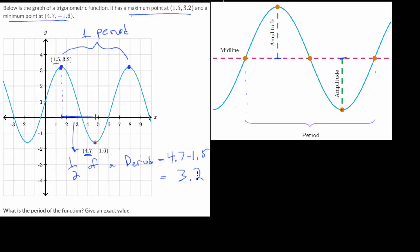And like I mentioned, this is half the period. So to figure out the period, we need to take this number of 3.2 and multiply it by 2, we just add it to itself, and we find a value of 6.4.